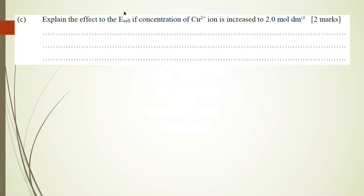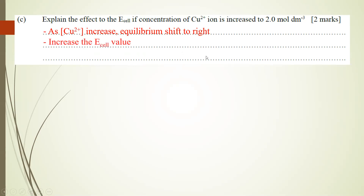Part C: explain the effect on E cell if the concentration of Cu2+ is increased to 2.0 mol/dm³. As the concentration of Cu2+ increases, the equilibrium shifts to the right, and therefore E cell increases. With that, that is all for question number 4. I will see you all in the next lesson tomorrow. Thank you.